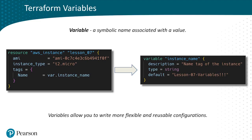Let's introduce Terraform variables. A variable is a symbolic name associated with a value, and it works the same way in Terraform as it does in other programming languages or in mathematics. Here we have two different blocks of information in Terraform: on the right we have the variable block, where we assign a symbolic name and associate the value, and on the left we have a standard resource block where we call on or refer to the variable.